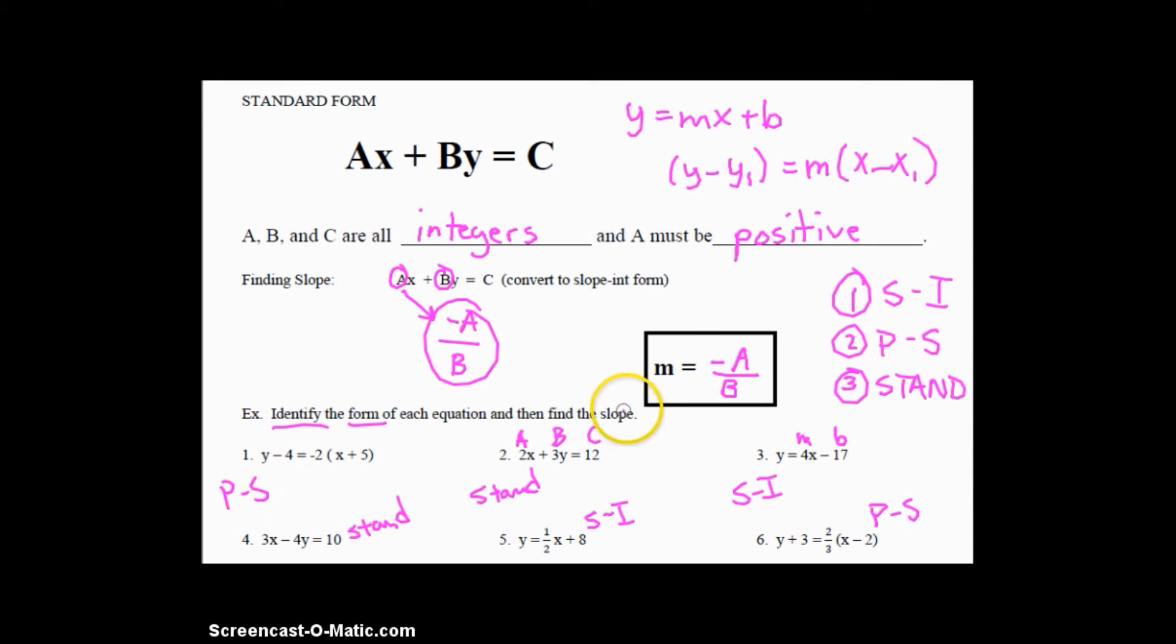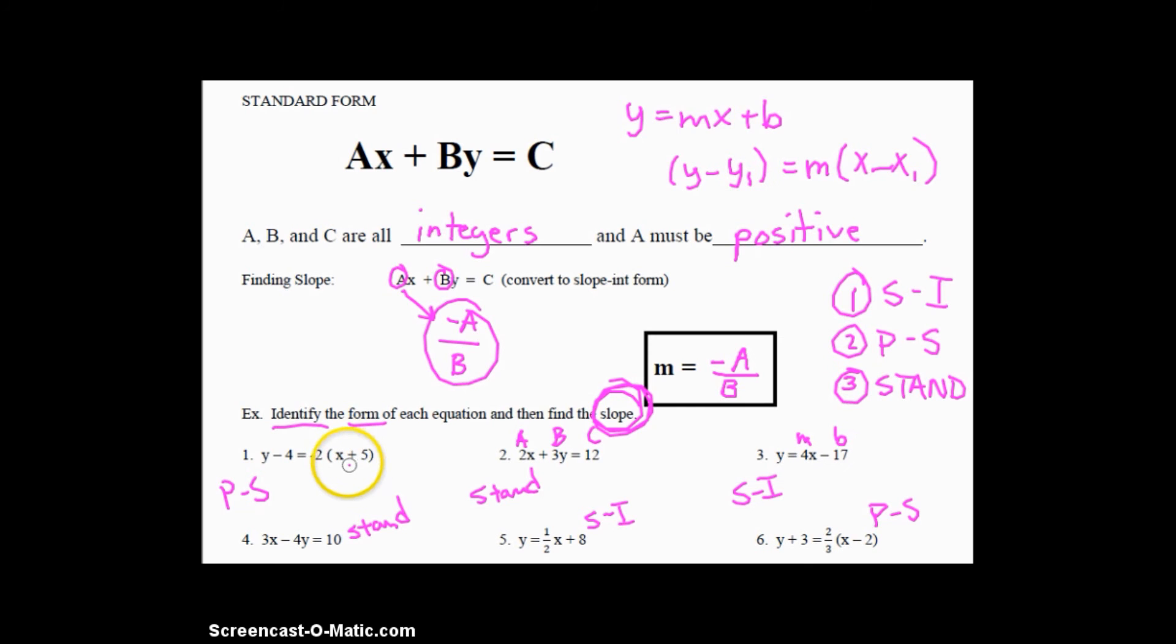Okay, now we're going to go back through and actually find the slope for each one of these. Some of these are going to be very straightforward. You're going to be able to pick it out in an instance. If you look at our first one, y minus four is equal to negative two times the quantity of x plus five. Now, if we're looking at our point-slope form, which is this form up here, y minus y₁ equals m times x minus x₁. Where is our slope located? Our slope is located at this m. So our m value is on the outside of our parentheses. So negative two is therefore our slope. That's all you have to do. Pick out the slope using that formula.